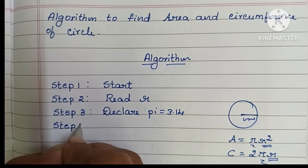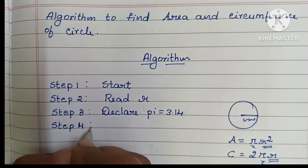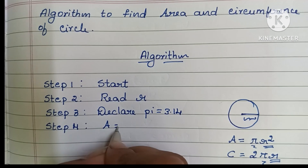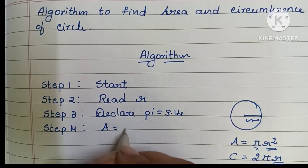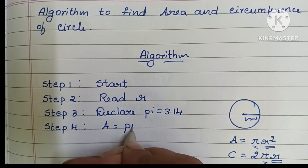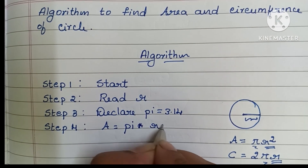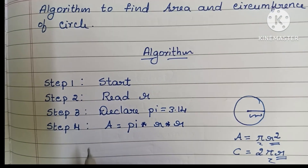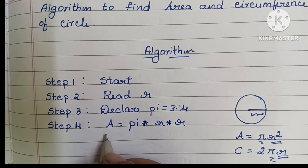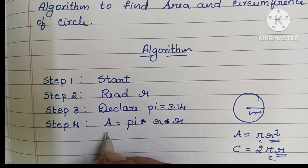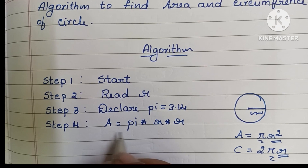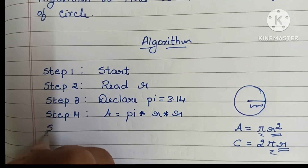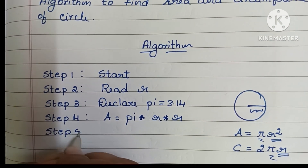In Step 4, we have to start the calculation. The formula to find the area of a circle is: A is equal to pi into r into r.